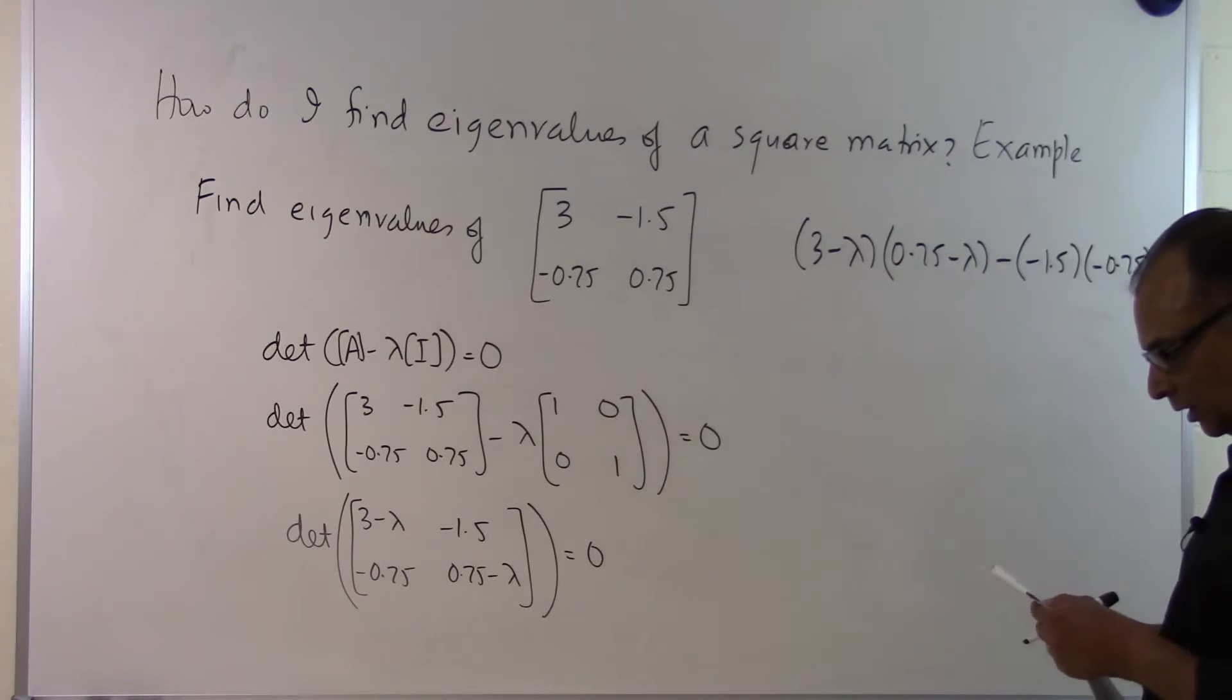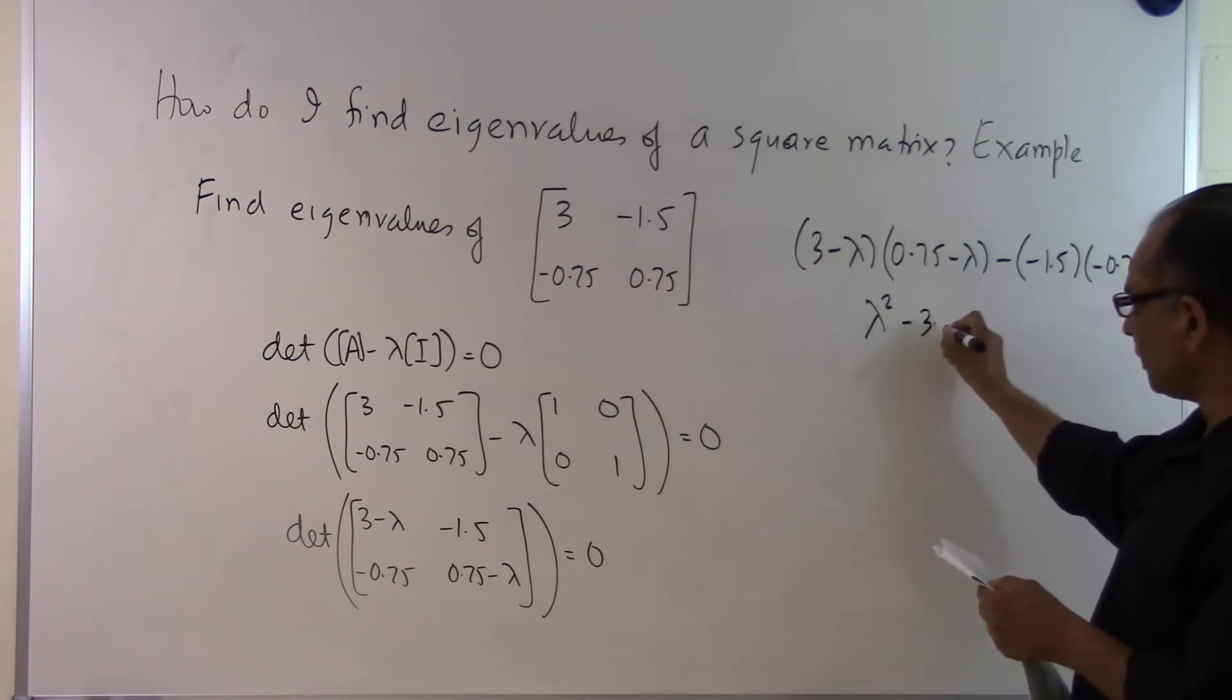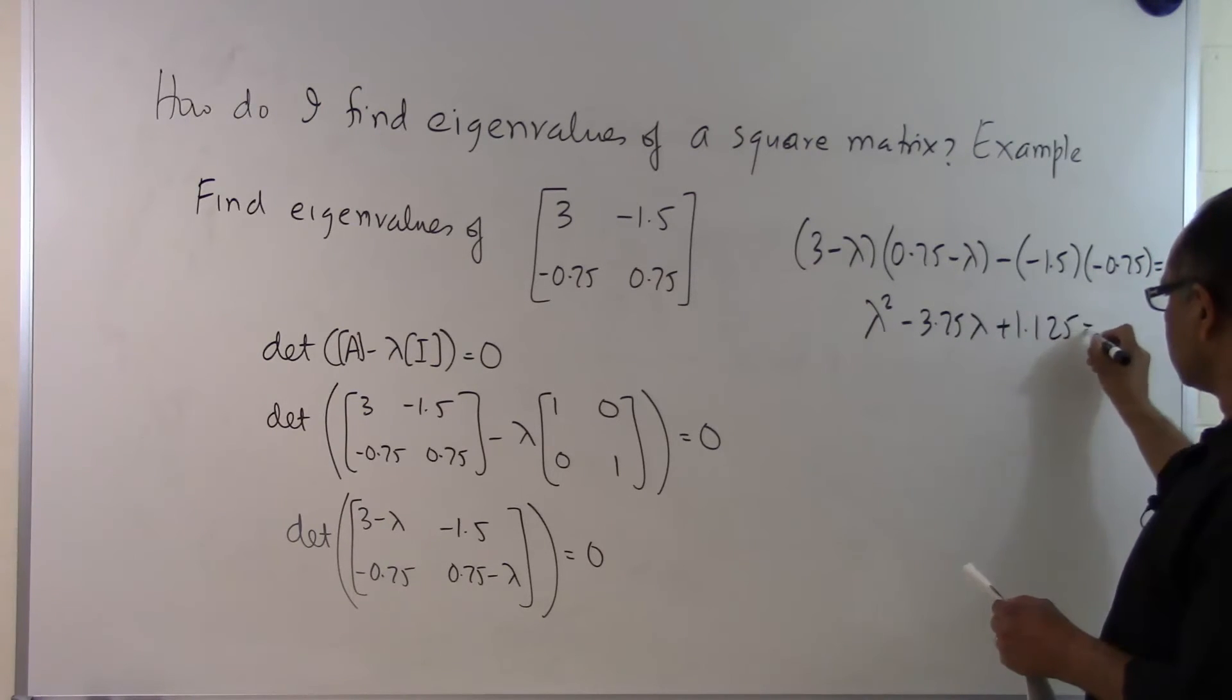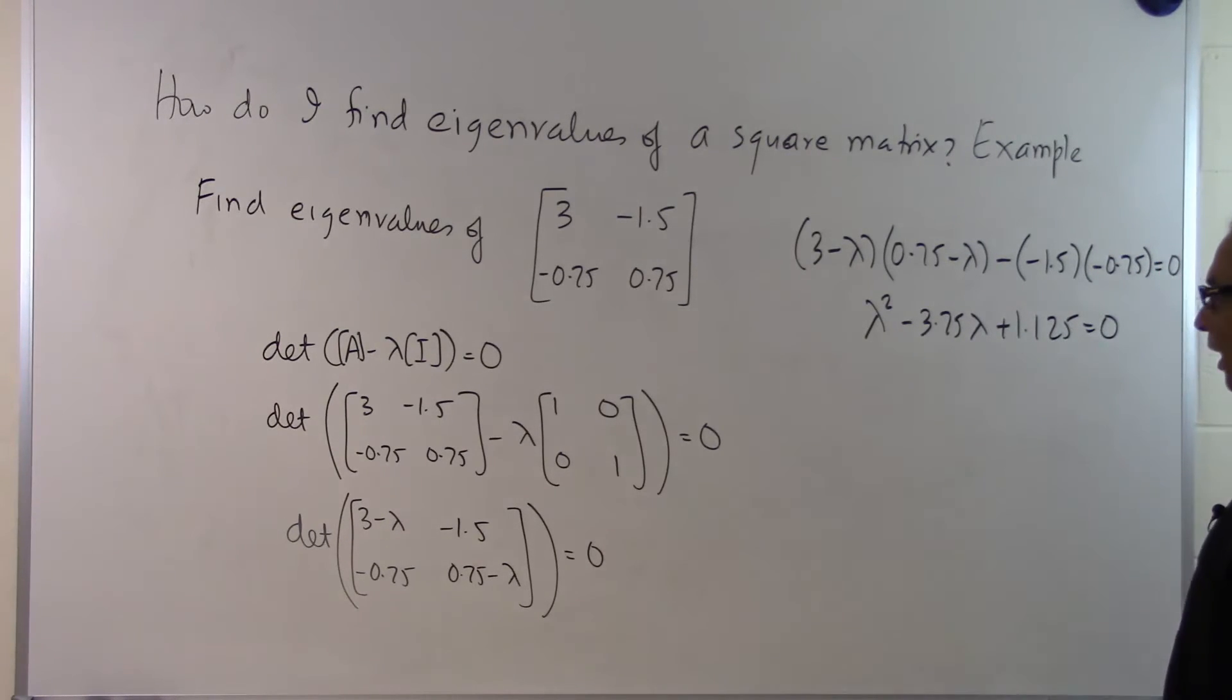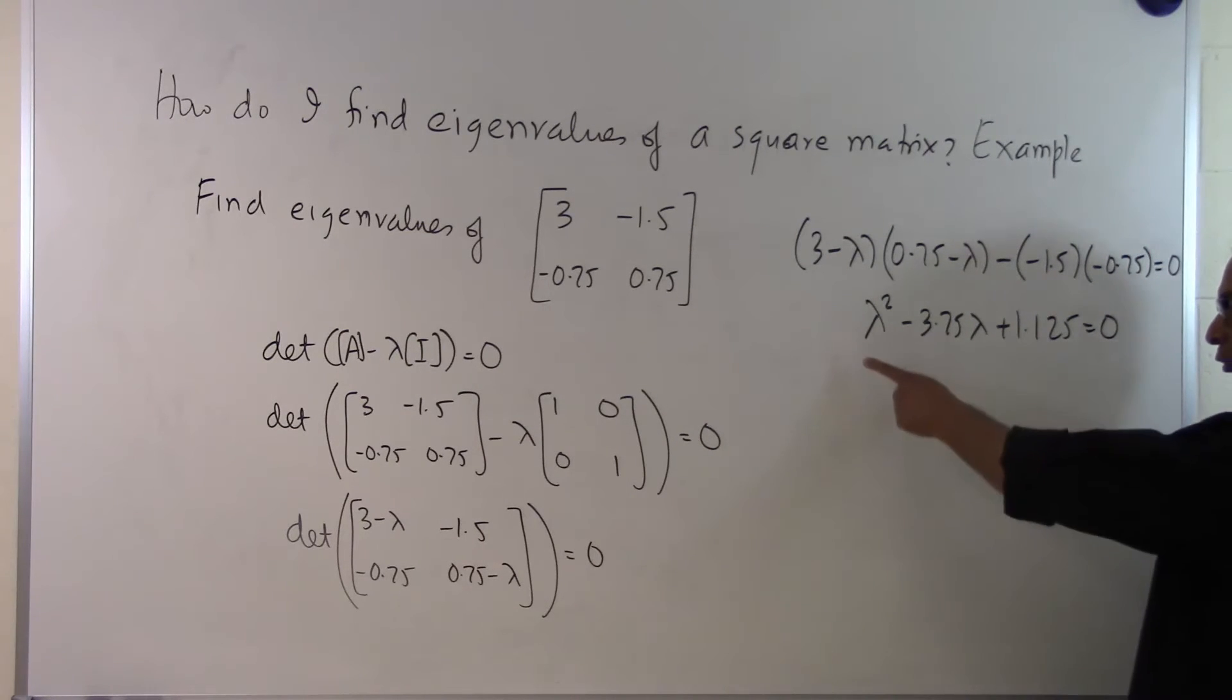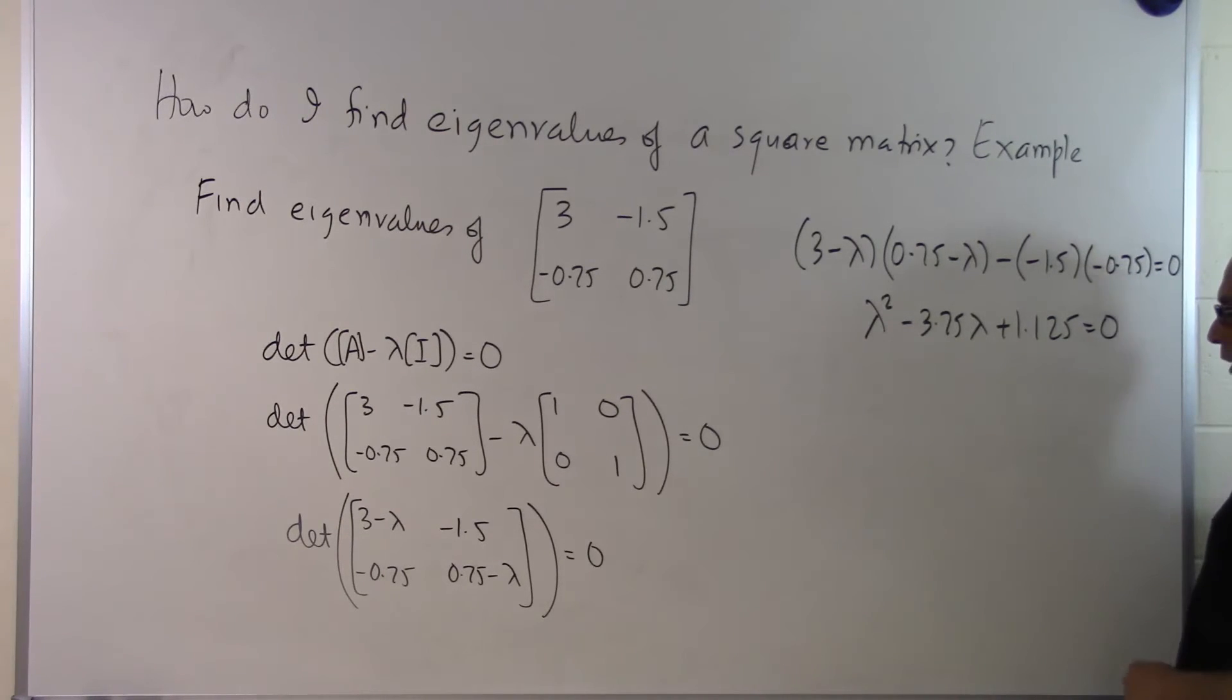If we expand this, we get λ² - 3.75λ + 1.125 = 0. As you can see, we have a 2×2 matrix from which we're finding eigenvalues, and we get a second-order polynomial equation, a quadratic equation.